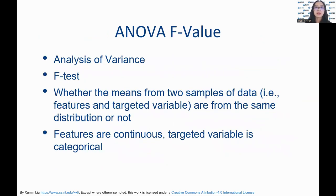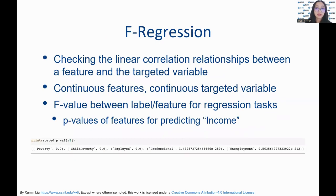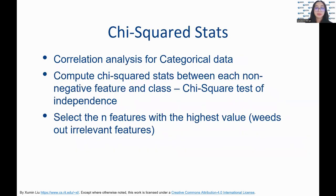ANOVA f-value is suitable for a prediction task where continuous features are used to predict a categorical variable. F-regression is suitable for a prediction task where continuous features are used to predict a continuous variable. Chi-squared calculates the correlation analysis for categorical data, where we proceed to select features with the highest values.